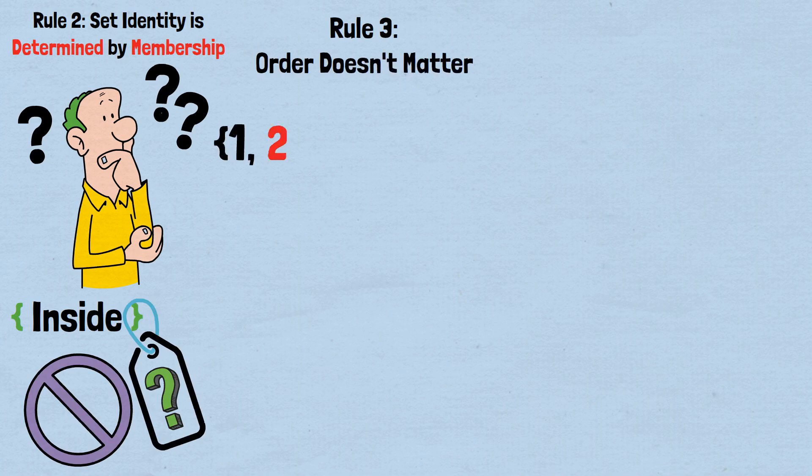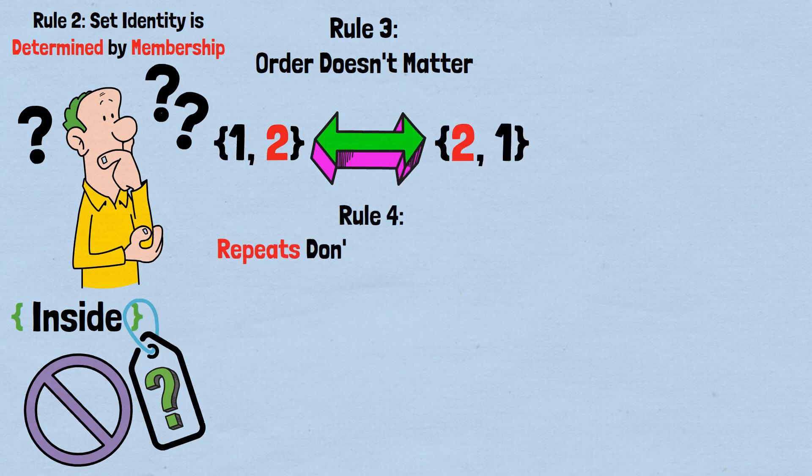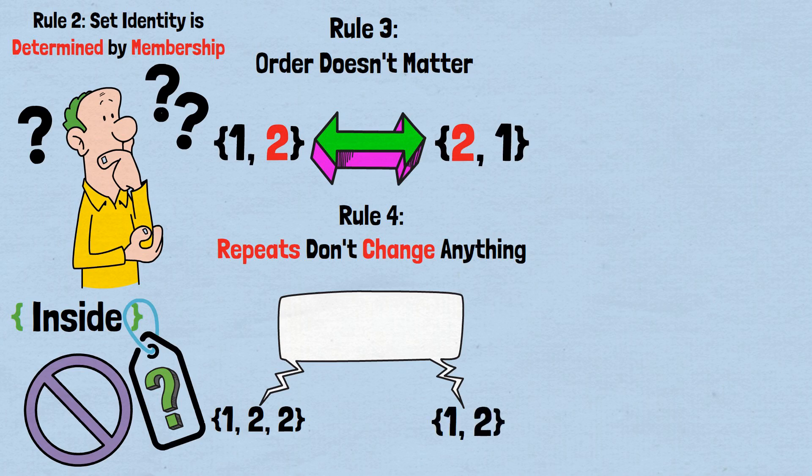Rule three, order doesn't matter. The set {1, 2} is exactly the same set as {2, 1}. Rule four, repeats don't change anything. The set {1, 2, 2} is identical to the set {1, 2}. Adding the same element multiple times doesn't create a new set.